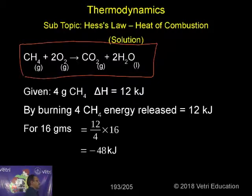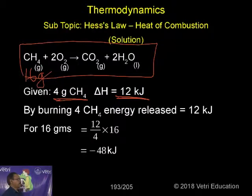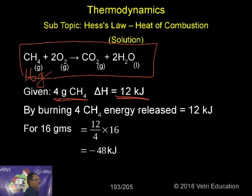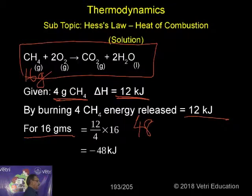Listen — what is the given data? 4 grams of methane gives 12 kilojoules. We know methane's molecular mass is 16 grams. So by burning 4 grams of methane, energy released is 12 kilojoules. But for burning 16 grams, energy released will be 48 kilojoules.